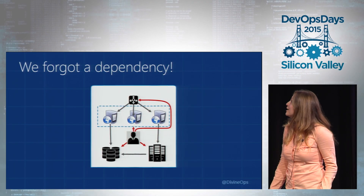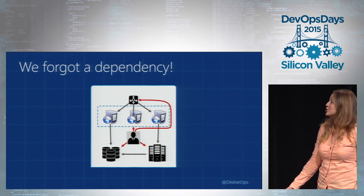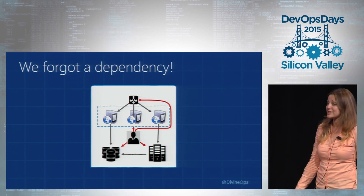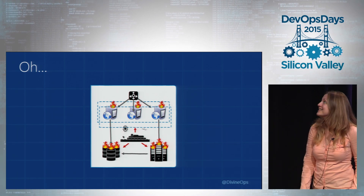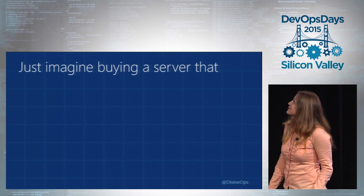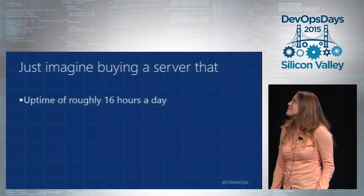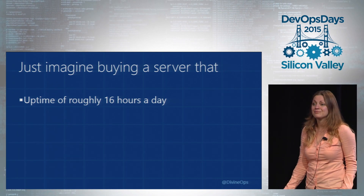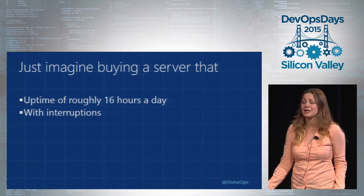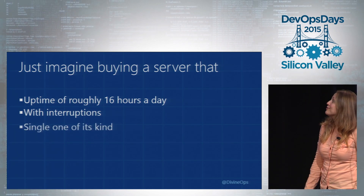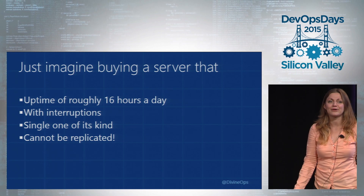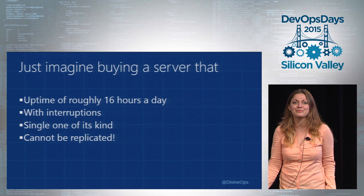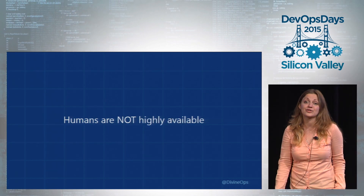We probably just forgot a dependency. In addition to all of our servers, meet Bob. Bob is an awesome person — a magician. He knows everything, manages everything, and whenever there is a problem, everybody comes to Bob. And Bob just happened to go on vacation. Imagine buying a server with an uptime of roughly 16 hours a day, with interruptions in that uptime, and it's the only one in the world — you can't replicate it. You would never sign that check as an administrator. The truth is that humans are just not highly available.